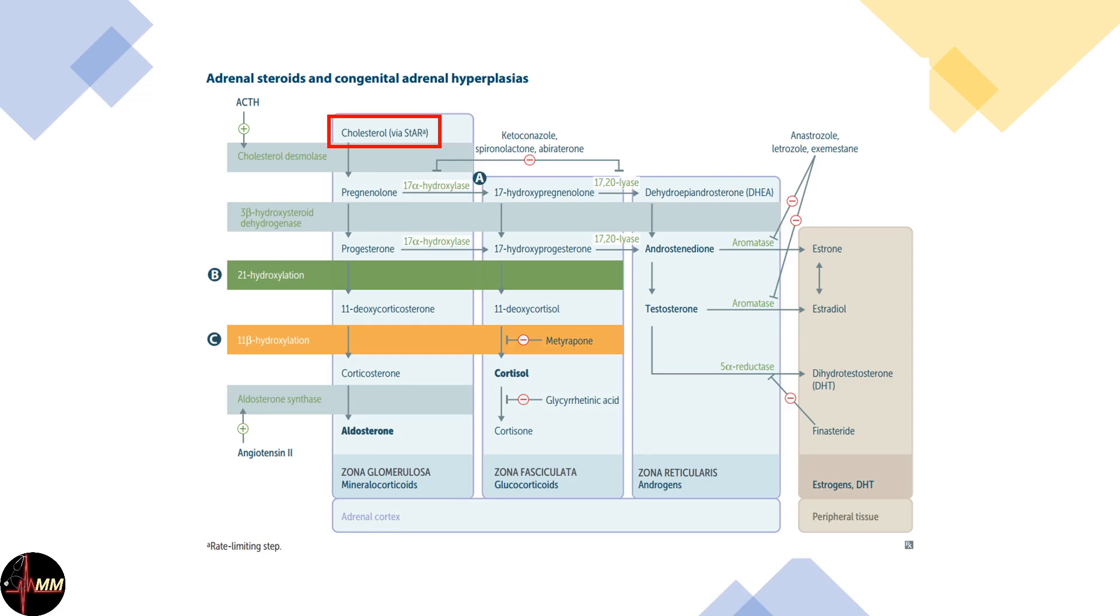First, cholesterol is converted to pregnenolone via cholesterol desmolase, the rate-limiting step stimulated by ACTH. Pregnenolone can follow three main pathways: mineralocorticoid, glucocorticoid, and androgen synthesis. Let's look at each pathway.